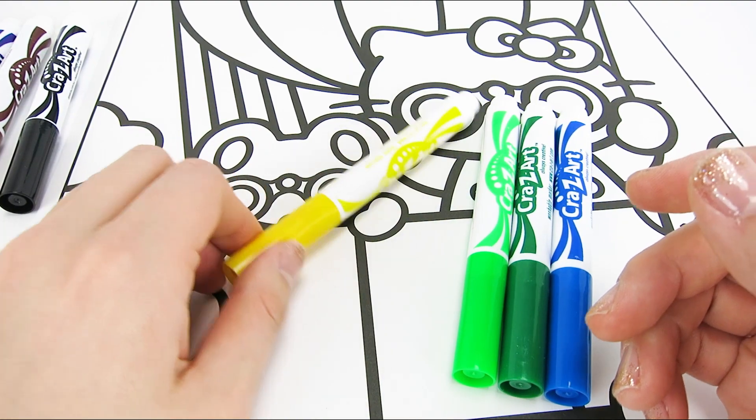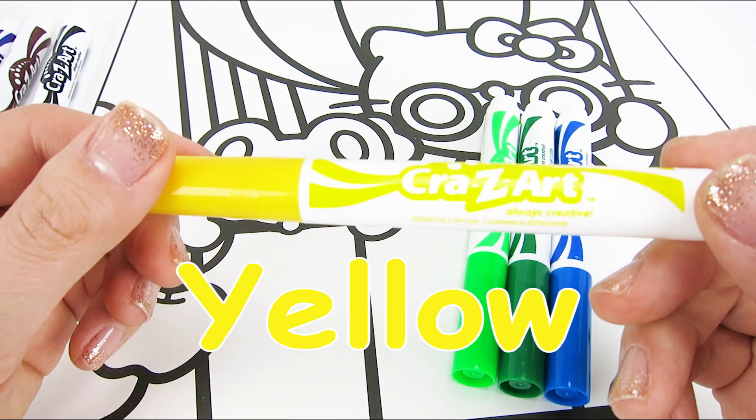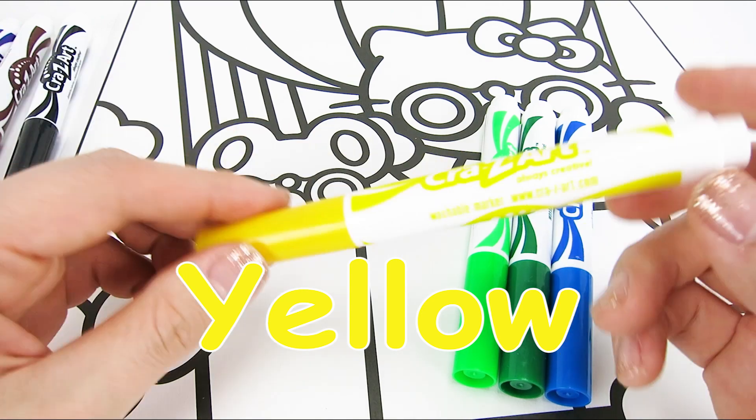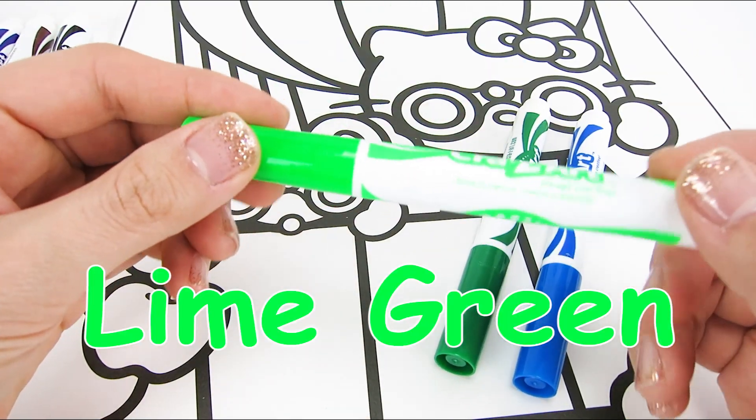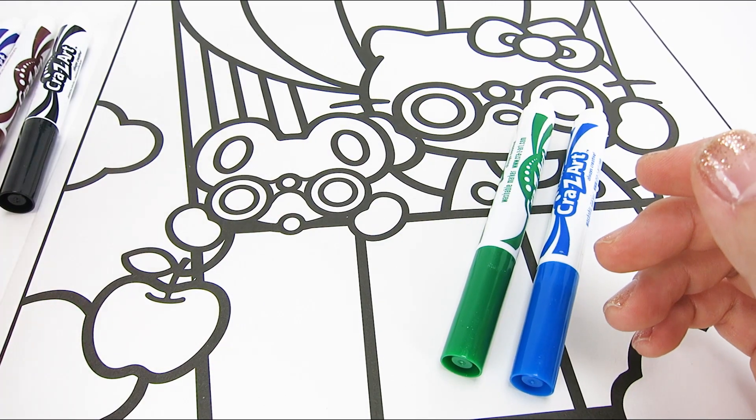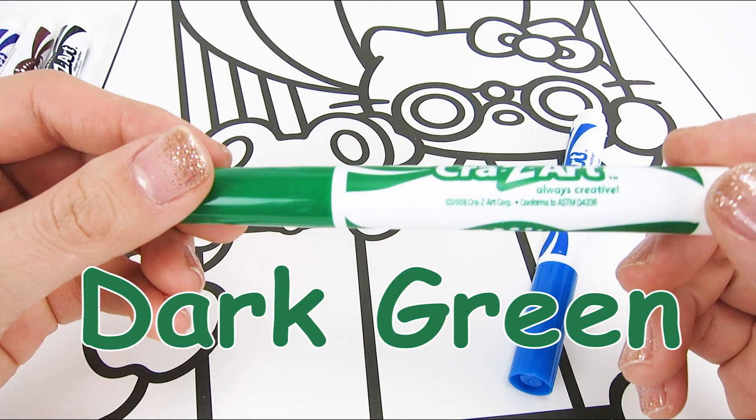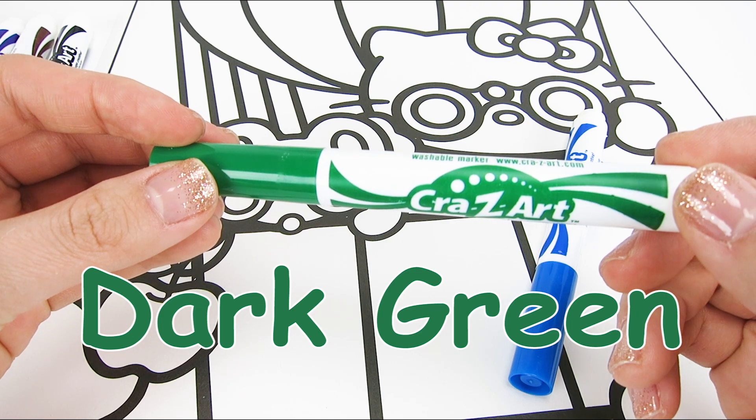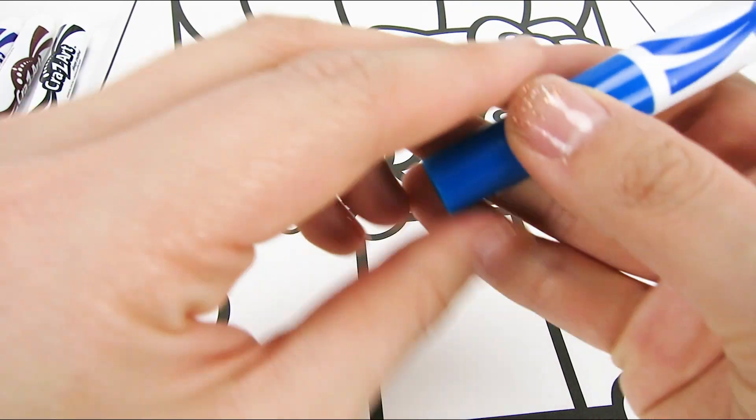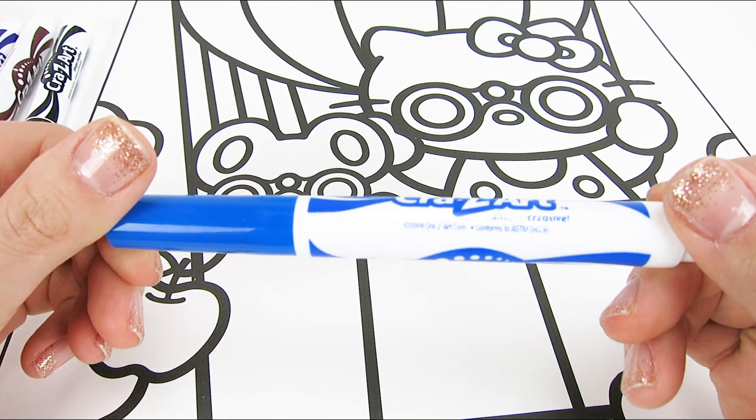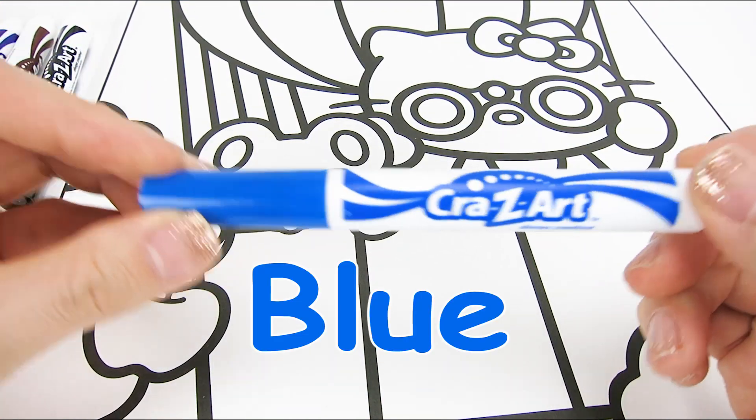How about this one? It's yellow. Okay, here come two colors that are like brothers. First is lime green. And second, dark green. Don't they look great together? Okay, last but not least, one of the best colors in the pack. It's blue.